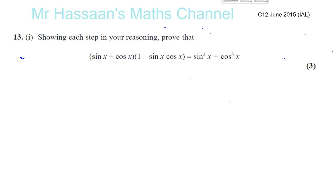So we want to show that this particular expression can simplify. You've got sin x plus cos x times 1 minus sin x cos x. You've got to show that it becomes sin cubed x plus cos cubed x. So we've just got to simply multiply, just like in normal algebra.